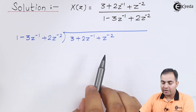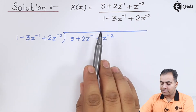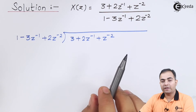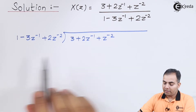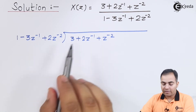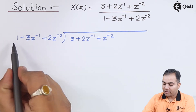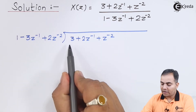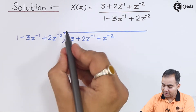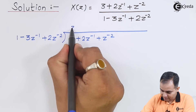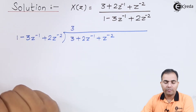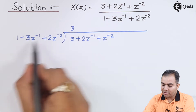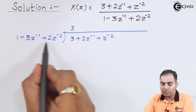The denominator is already arranged from Z to the power 0 down to Z to the power minus 2, that is from higher power to lower power. We will directly divide the numerator. Which term do we multiply by 1 so that the result is 3? The answer is 3. If we multiply by 3, we get 3, so we multiply 3 with the whole denominator.